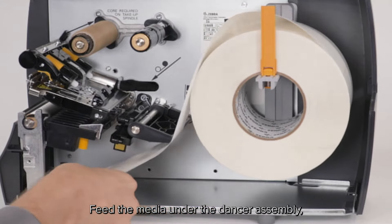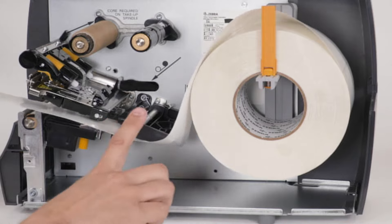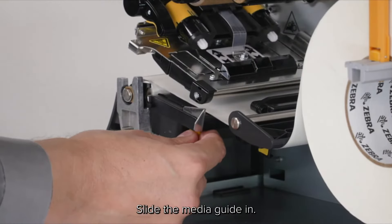Feed the media under the dancer assembly, through the media sensor, and under the printhead. Slide the media guide in.